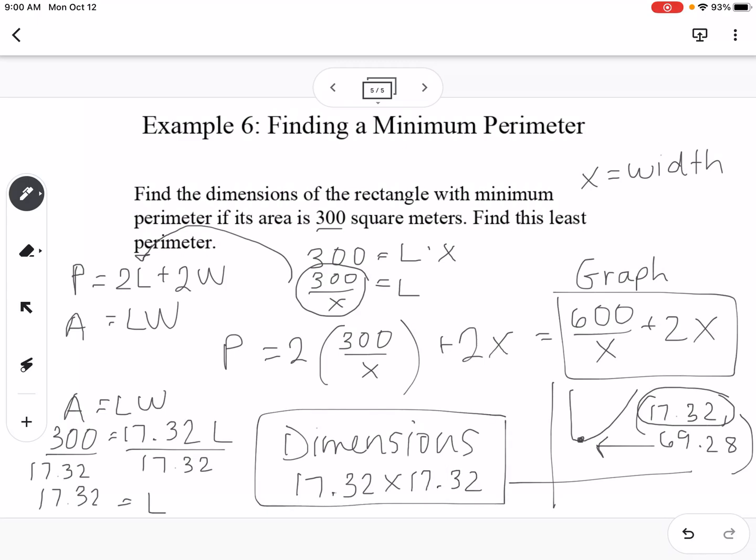So that means our dimensions are 17.32 by 17.32, and if you're trying to find the minimum perimeter, so what that perimeter would be, that would be this y value of your graph right there. Let me know if there are any questions.